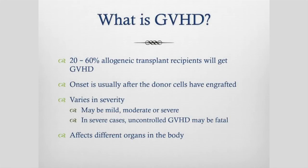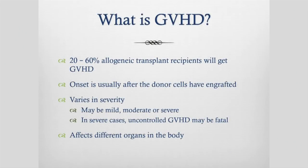20 to 60 percent of allogeneic transplant recipients will get some form of graft versus host disease. The onset is usually after the donor cells have engrafted — it takes about two to three weeks for those cells to start growing, and usually graft versus host disease will occur after that time. Very rarely it can occur beforehand. It does vary in severity: it may be mild, moderate, or severe, and in severe cases uncontrolled graft versus host disease may be fatal, and it affects various organs in the body.